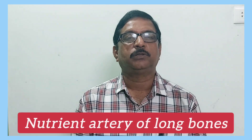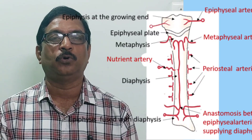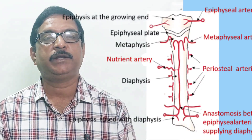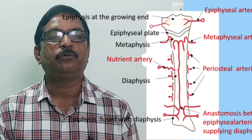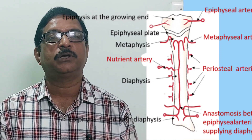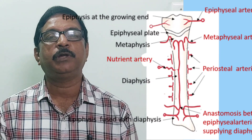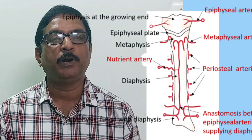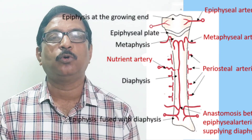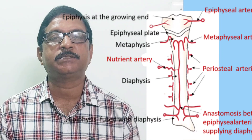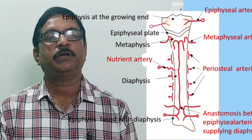The next tortuous artery is the nutrient artery of the long bones. The long bones have one nutrient foramen through which the nutrient artery enters the bone. Before entering the nutrient foramen, this artery is tortuous — to adapt itself during the movements of the bone, or rather during the movements of the proximal and distal joints — in order to overcome stretching.